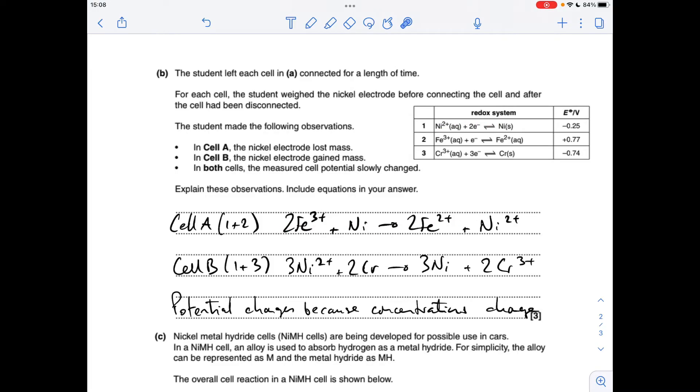The overall equation obviously is based on combining those two processes—that one forwards, that one reverse—but we'd have to double the iron one because of the electrons only being one whereas there's two there.